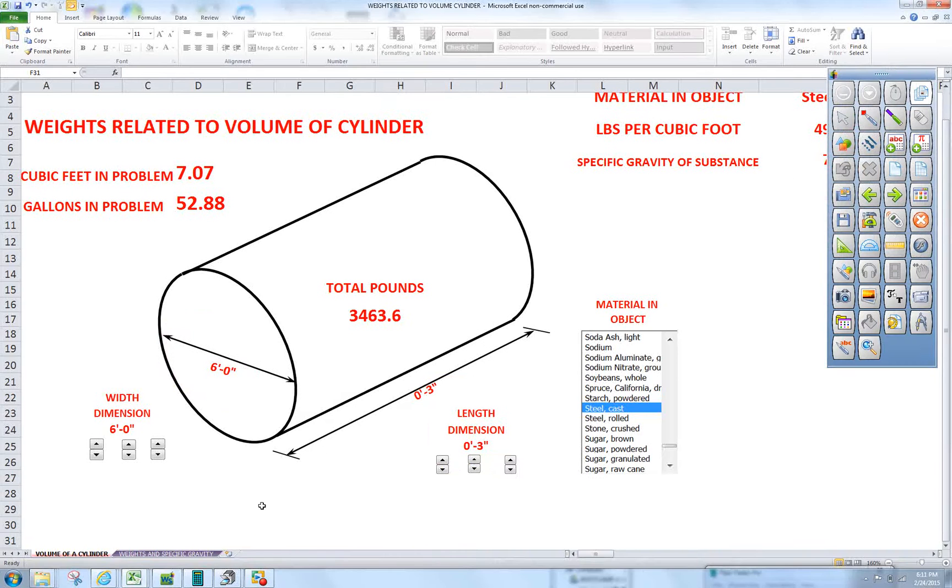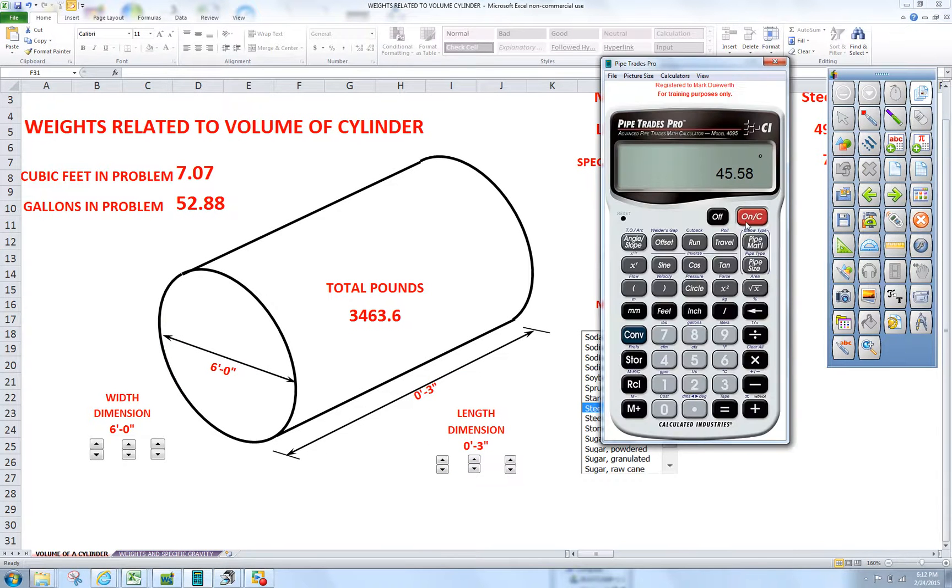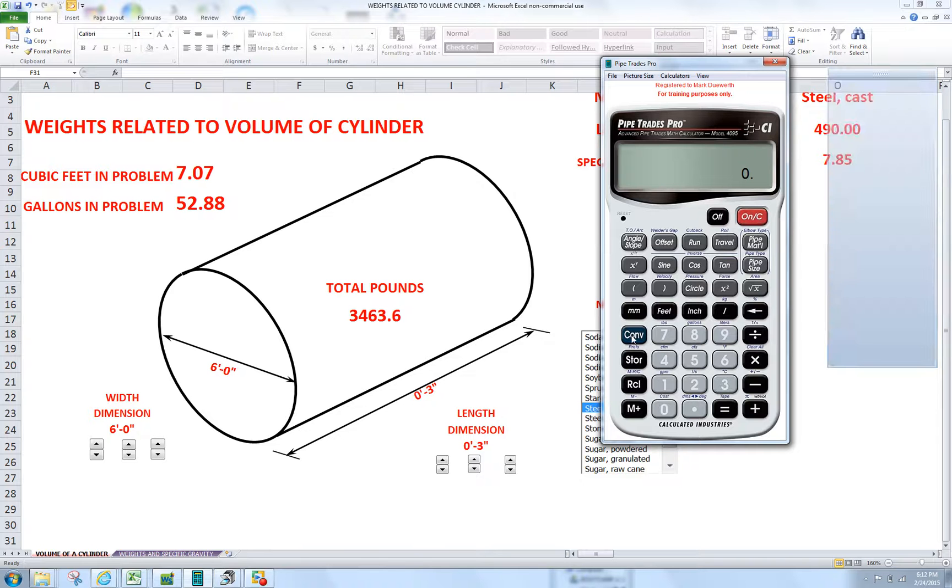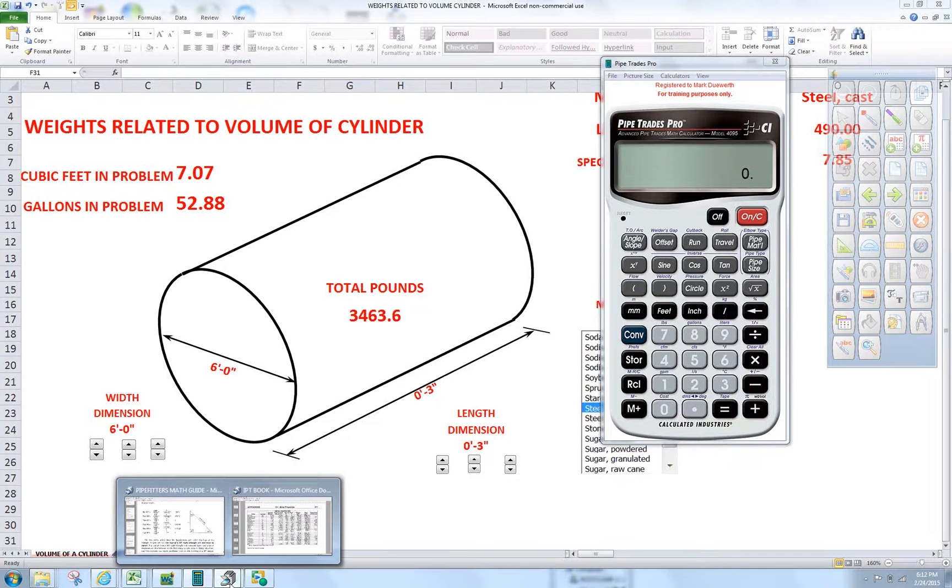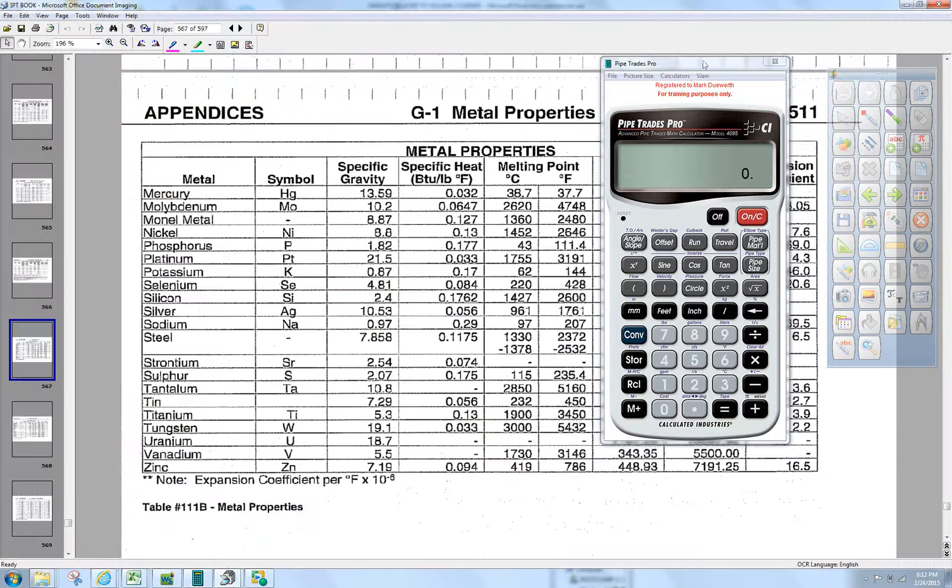What we're going to do is take our calculator. If you're familiar with the Pipe Trades Pro, the default setting in the calculator is for water at 62.42. This is steel, so we're going to have to change this. If we look in our IPT book on page 511,